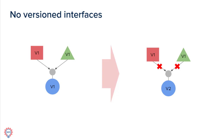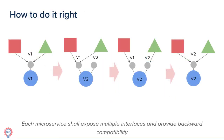As a rule of thumb, every microservice must support multiple interfaces: the current one and backward-compatible ones. If you make a breaking change, you must keep your old interface for backward compatibility. Then, one by one, update all consumer microservices to the new interface. Only when all microservices have moved can you deprecate and remove the old interface.